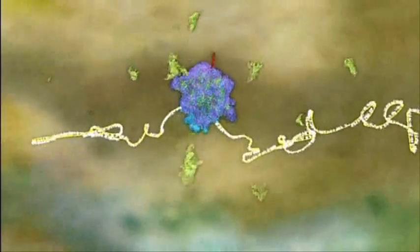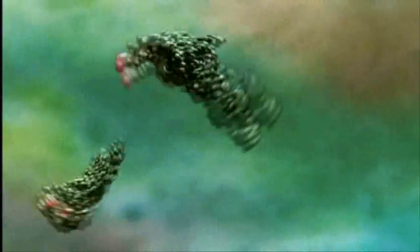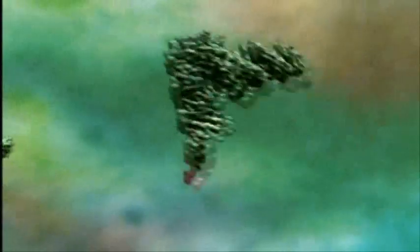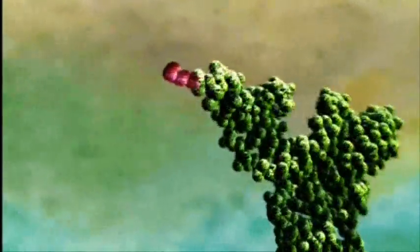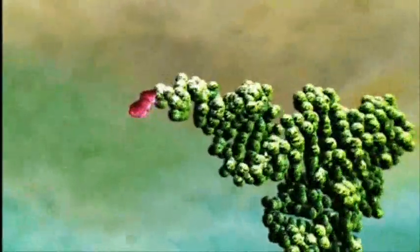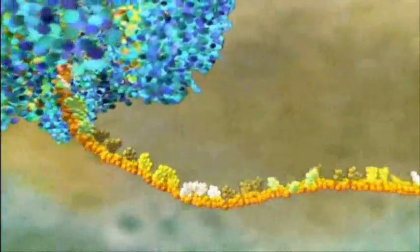The amino acids are the small red tips attached to the transfer molecules. There are different transfer molecules for each of the 20 amino acids. They all carry a specific three-letter code that will be read by the machine.